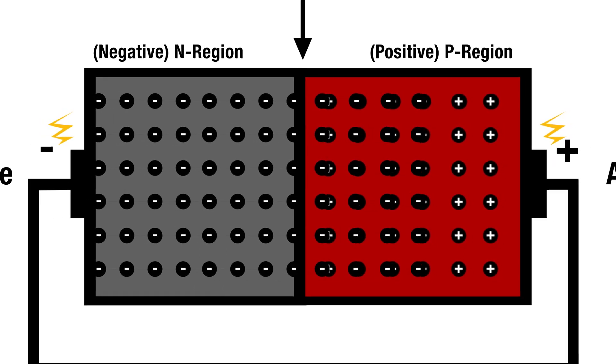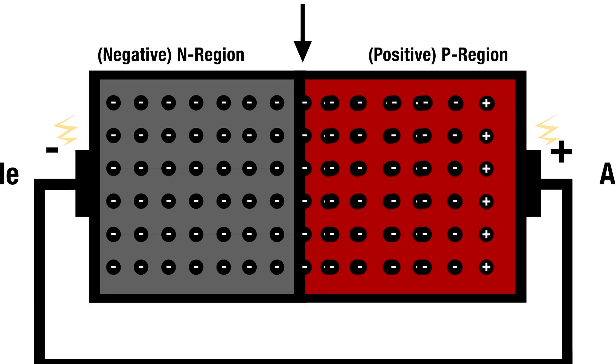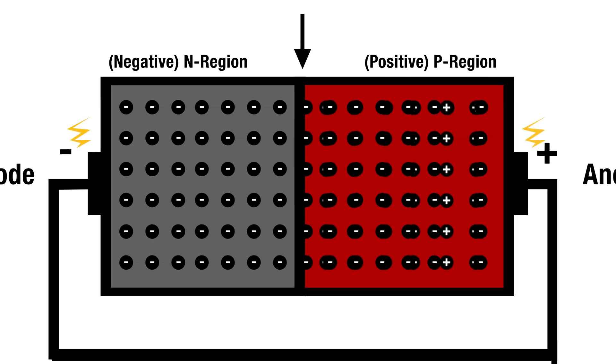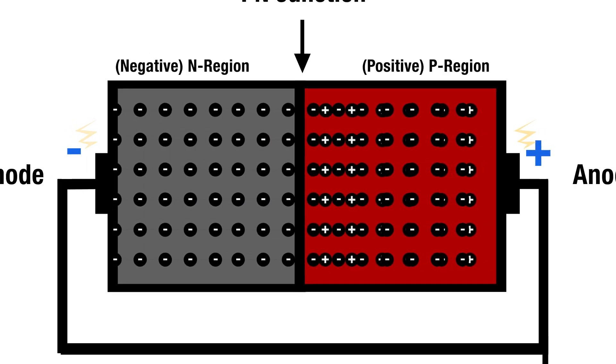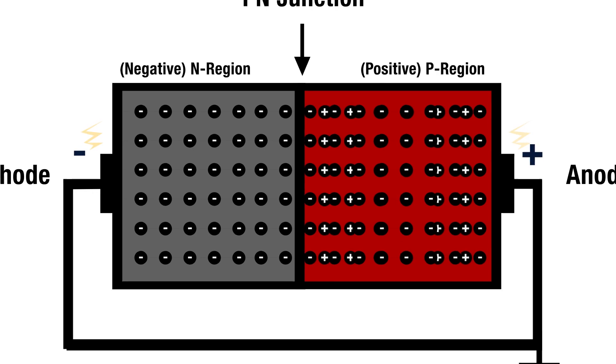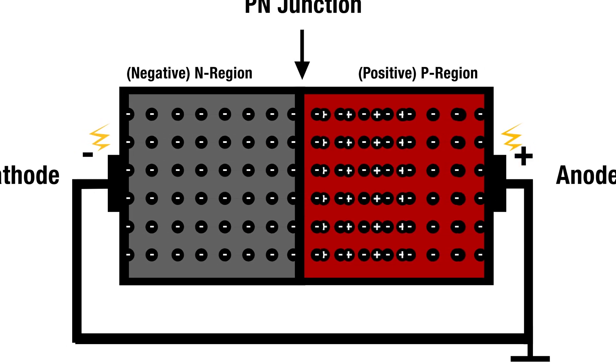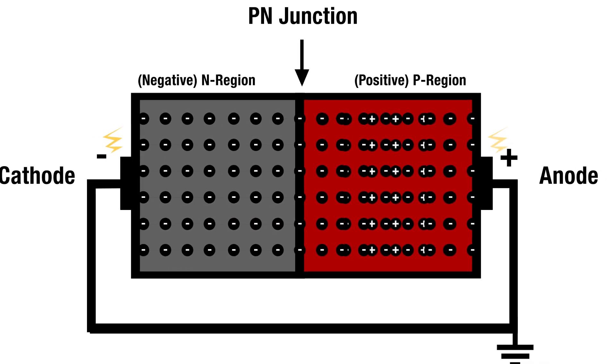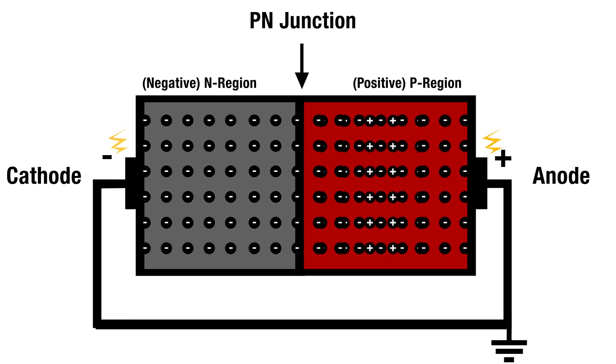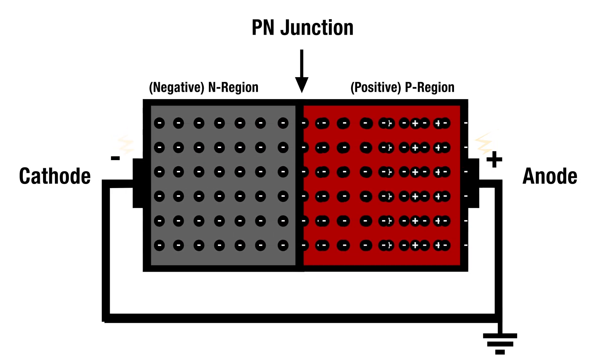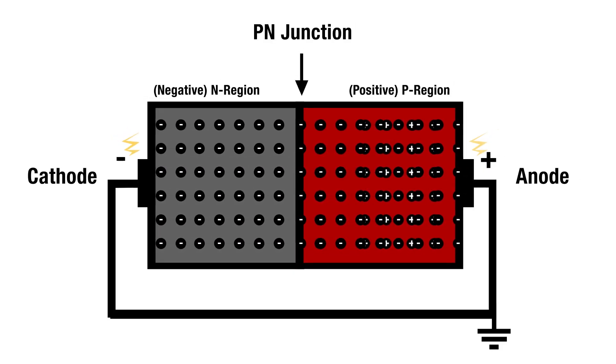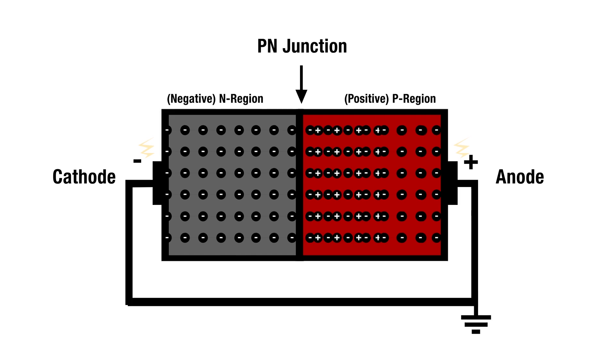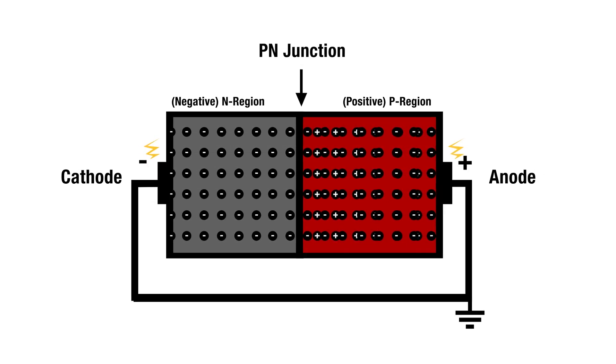Now, remember from before when we had those free electrons from the n-type region that came over to the p-type region to vacation in the holes? Well, now they've found something more attractive. They move out of the holes and onto the positively charged anode, leaving holes behind. Don't worry, those holes won't stay empty for long! The free electrons in the n-type region now have easy access to cross the junction, so they move right in, filling the holes. And the cycle continues! Free electrons from the cathode flow through the n-type region into the holes in the p-type region and onto the anode, around and around in the circuit.